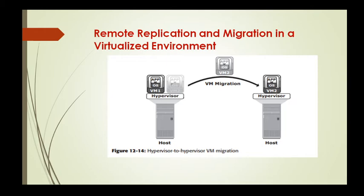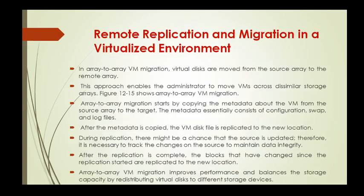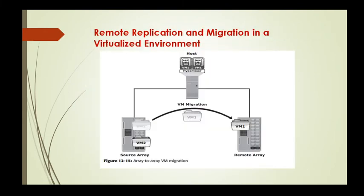In array-to-array virtual machine migration, virtual disks are moved from the source array to the remote array. This approach enables the administrator to move virtual machines across dissimilar storage arrays. The figure shows array-to-array virtual machine migration. Array-to-array migration starts by copying the metadata about the virtual machine from the source array to the target. The metadata essentially consists of the configuration, swap, and log files.